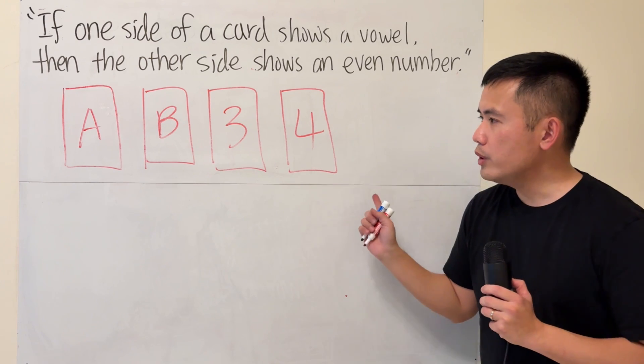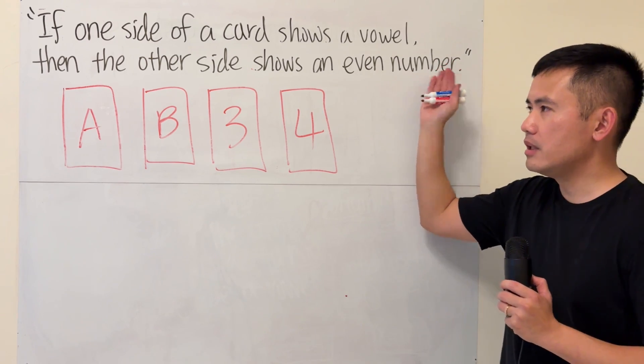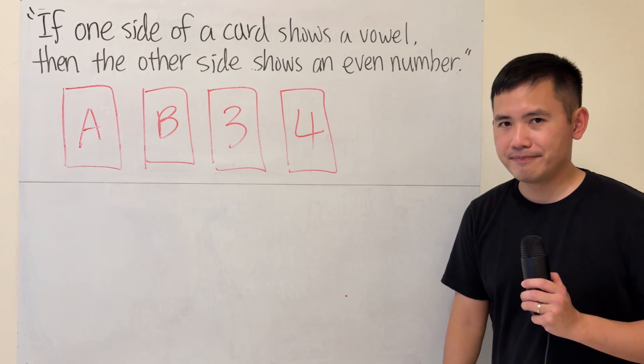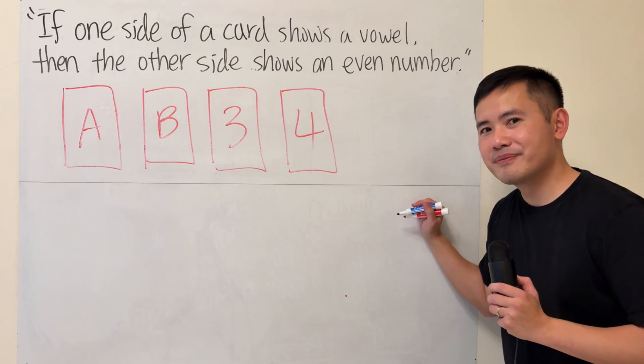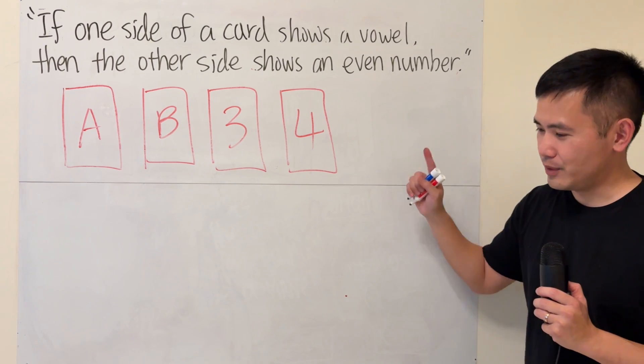The question is, which cards right here must be checked to see that the claim is correct? What do you think? Please pause the video and think about this first, and then watch the solution.